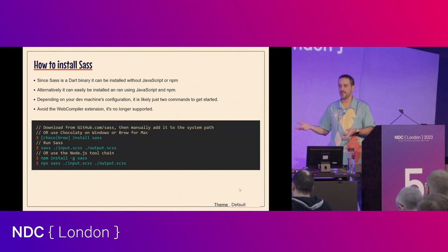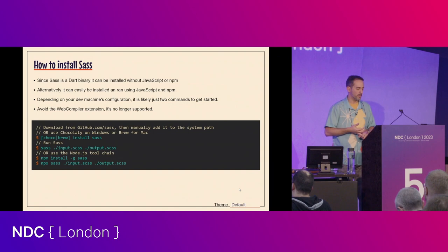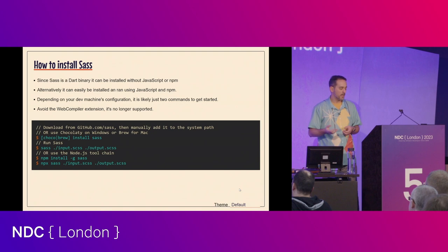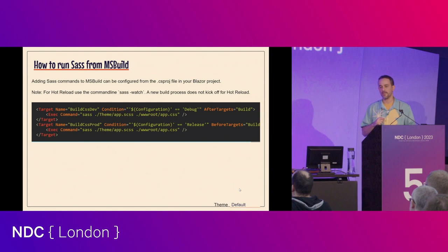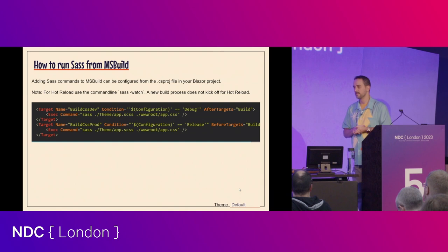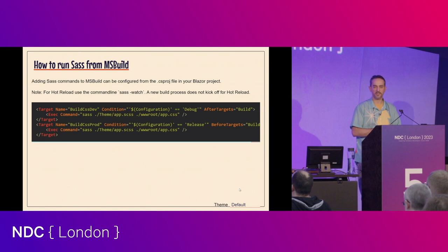Since Sass is a Dart binary, you can install it without NPM, JavaScript, or any of those things — on any operating system. On Windows you can use Chocolatey, on Mac you can use Brew. Just run 'choco install sass' and you have Sass available on your system. You run the Sass command with an input and an output, and that's it. Once installed, you can build this right off your MSBuild configuration — put in build targets and have Sass compile as your project compiles. You don't need Gulp, Grunt, Webpack, or any of that. All it needs is an input and output: where is the Sass file, and where do you want the compiled output to go?